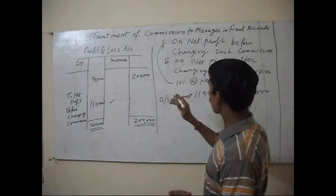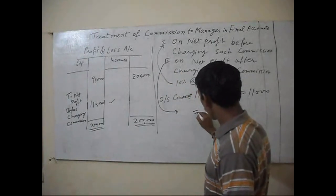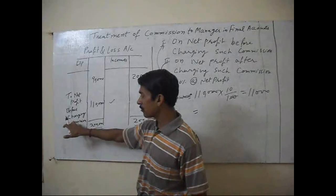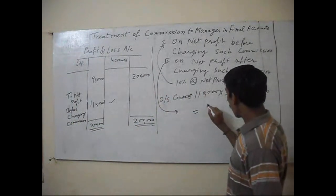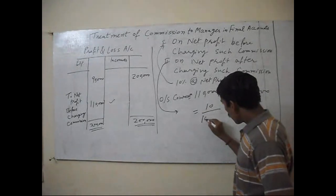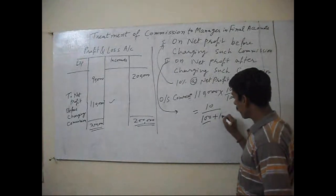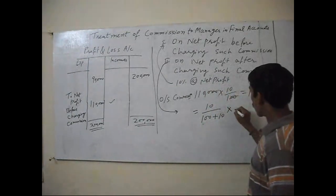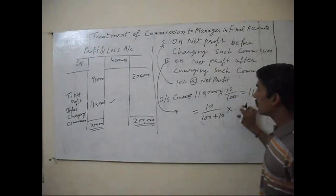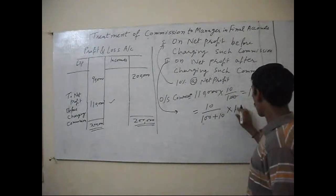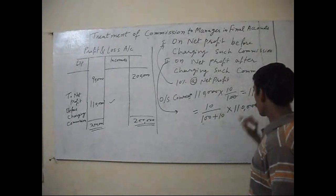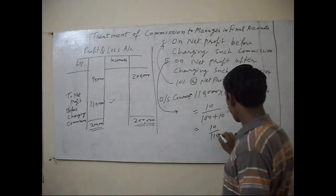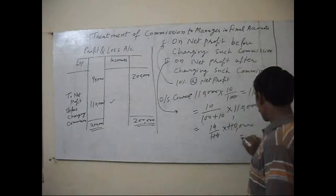In the second case, we are calculating on net profit after charging commission. So we add the commission in hundred: Rate divided by hundred plus rate. The net profit before charging commission is one lakh ten thousand, so the commission is 10 divided by 110 into one lakh ten thousand, which equals ten thousand.